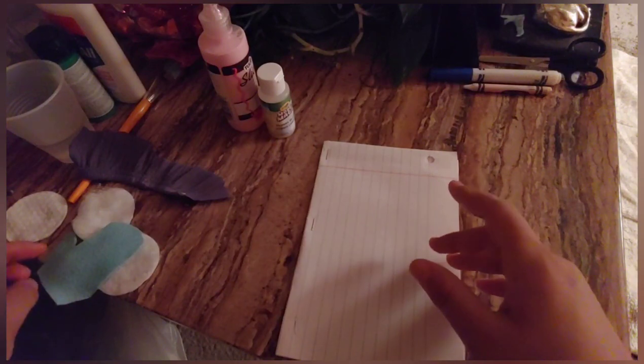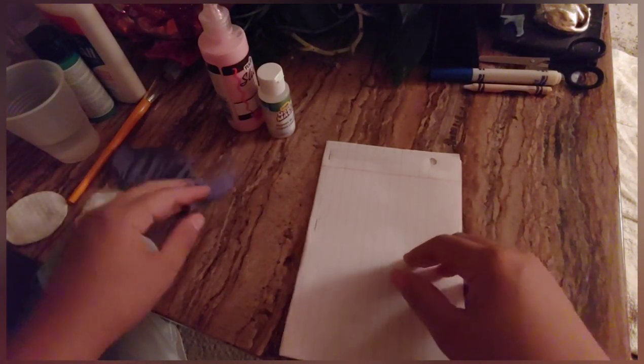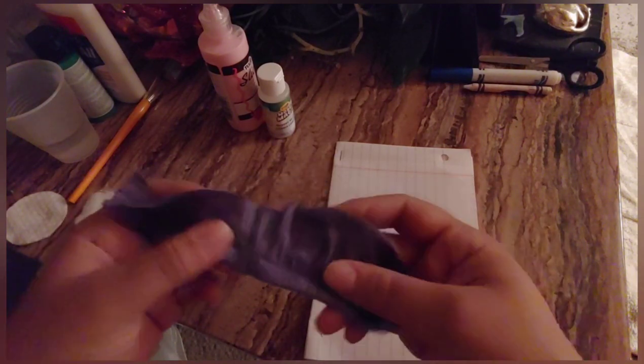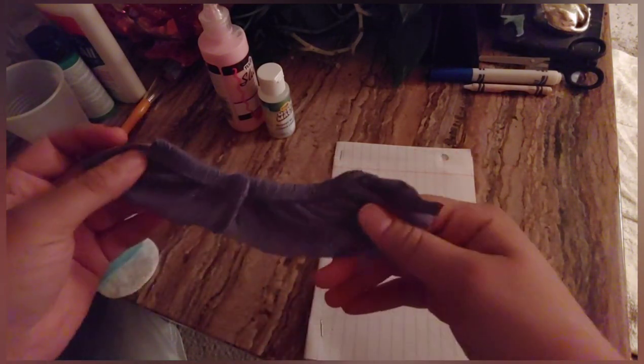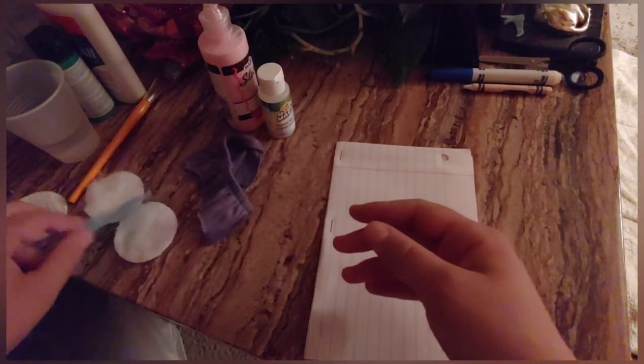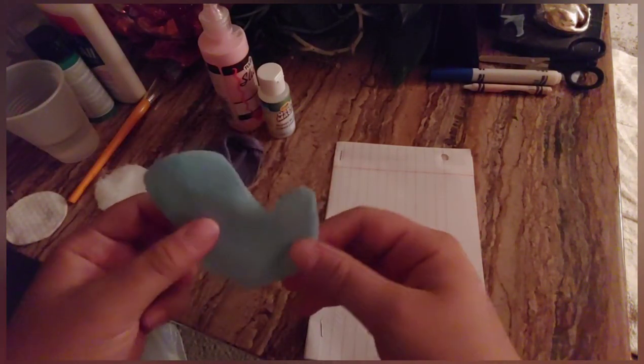After that, you can find some supplies around your house such as old clothing that you're no longer going to use. You just cut out some shapes. I made this one like a scarf. And I have some felt which I cut out to be a mitten.